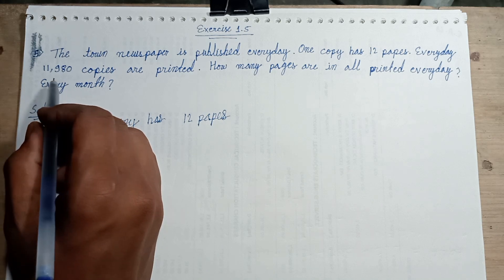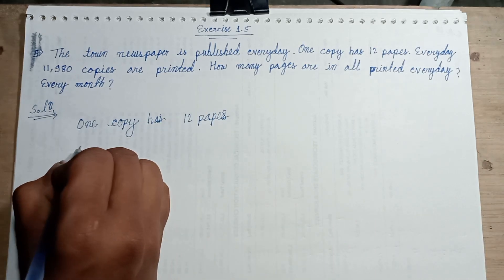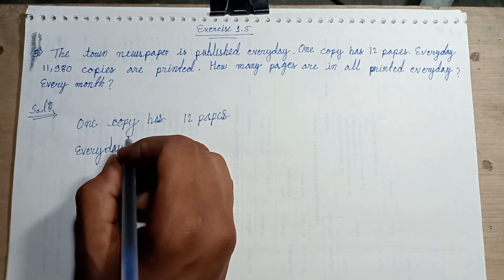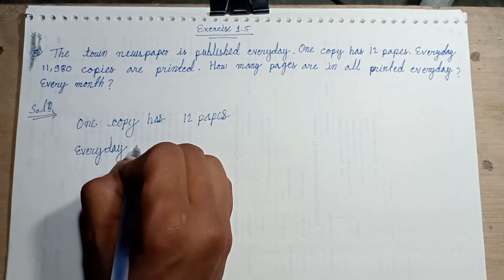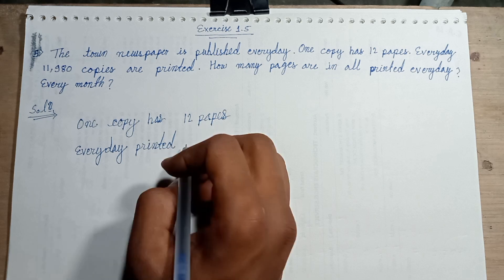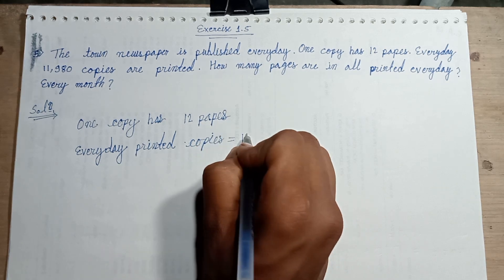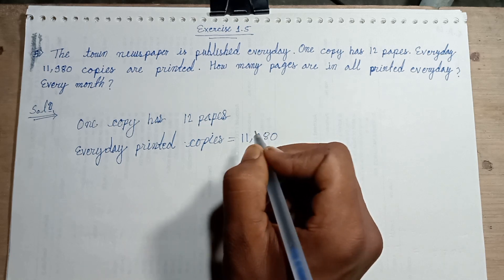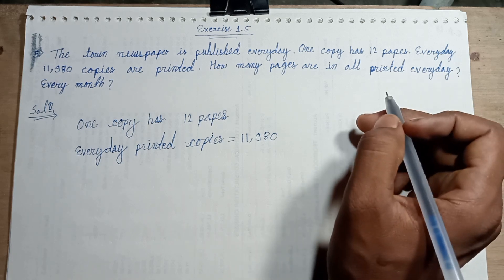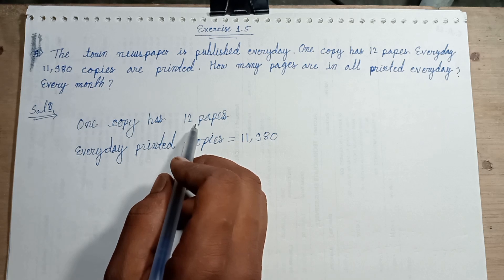Every day, 11,980 copies are printed. How many pages are in all printed every day? How many pages printed in one day? One copy has 12 pages.